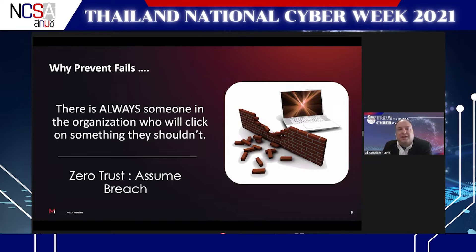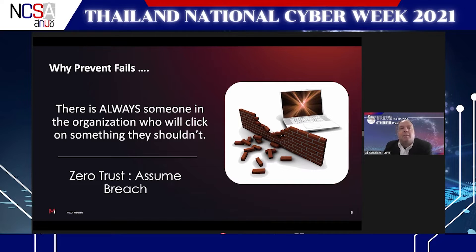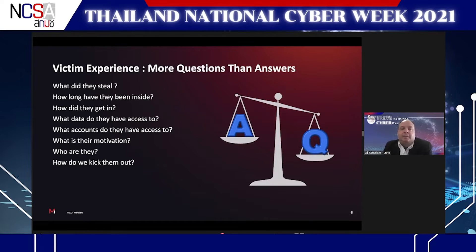At Mandiant, we've long said that intrusions are inevitable — there will be prevention failures. There's always someone in the organization who will accidentally click on something they shouldn't, and that's all an attacker needs. Modern security thinking with zero trust has the tenet of 'assume breach' — assume prevention will fail. That doesn't mean assume impact; the impact happens later. But the reason this matters is that today, when prevention fails, very commonly no one notices, so no one tries to intercept or respond.